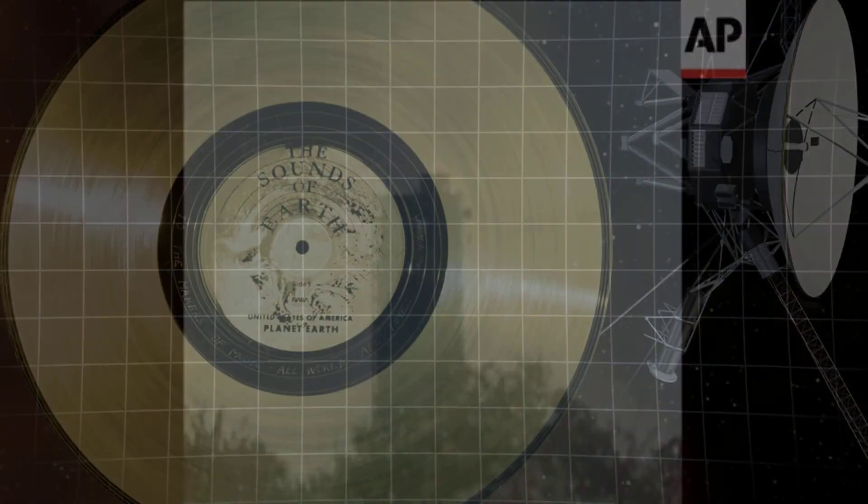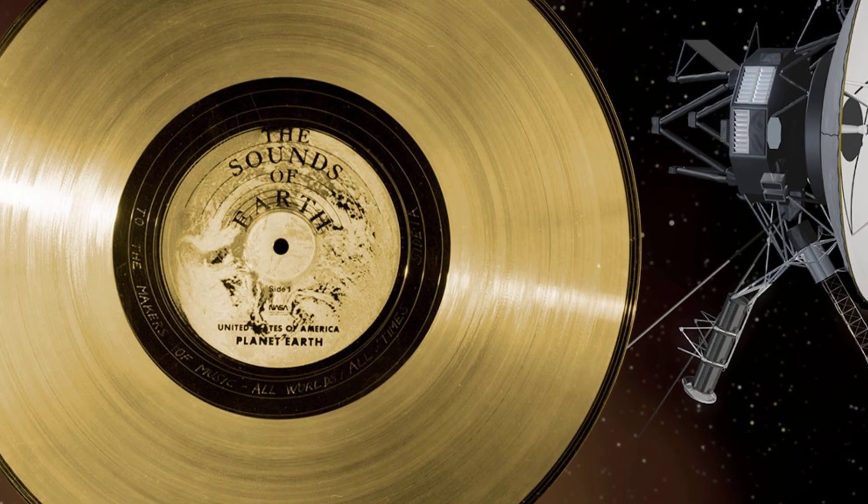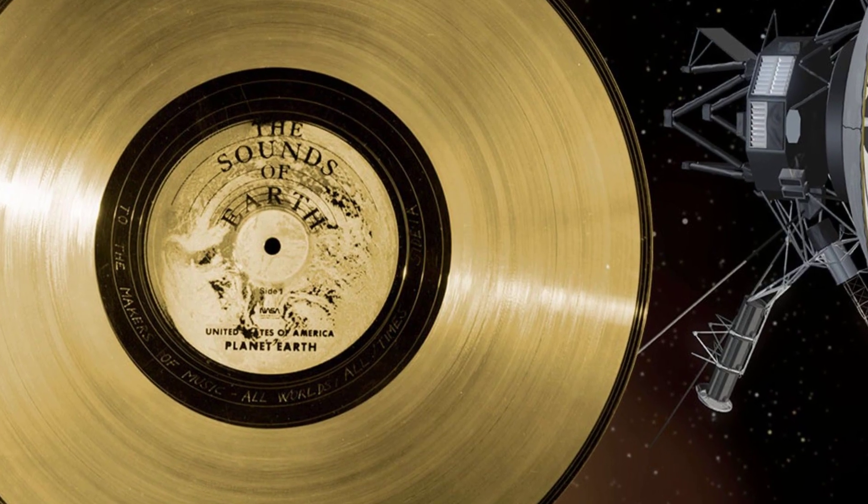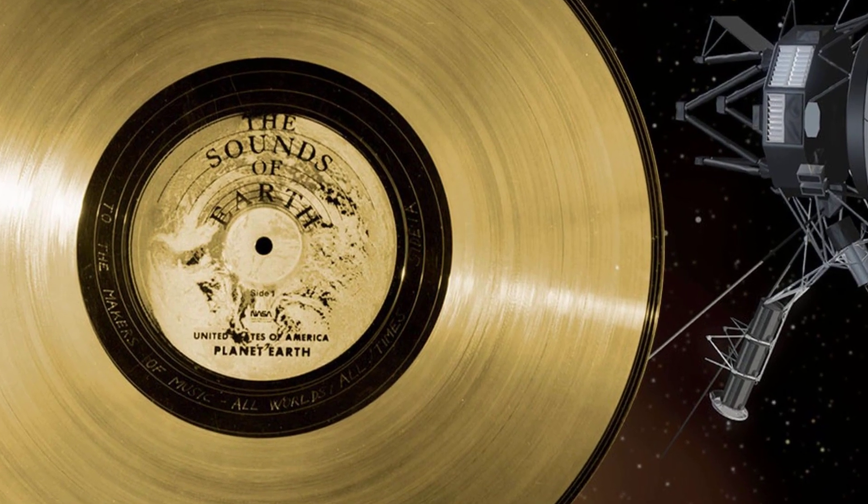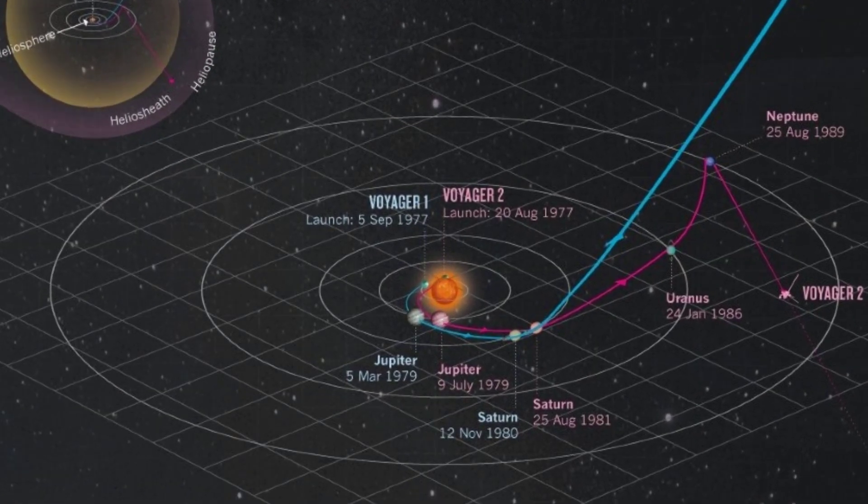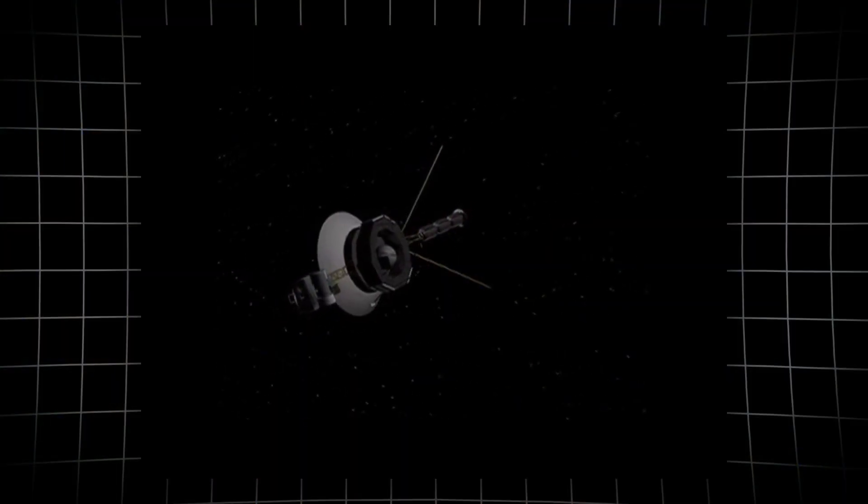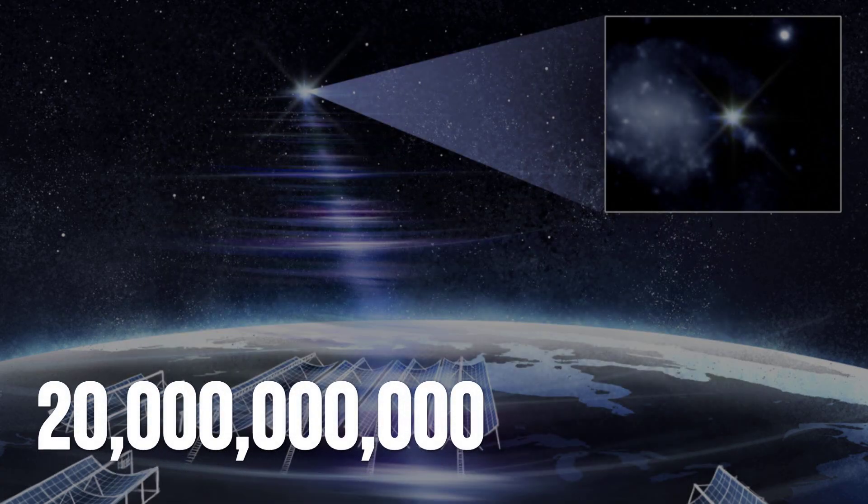In 1977, two small spacecraft left Earth on what was meant to be a five-year tour of the outer planets. Voyager 1 and Voyager 2 carried gold records, simple computers, and the hopes of a generation that dared to ask how far human curiosity could reach. No one expected them to last decades, let alone cross the final boundary of the Sun's domain. Yet nearly half a century later, both probes are still alive, still sending signals across the darkness, now more than 20 billion kilometers from home.